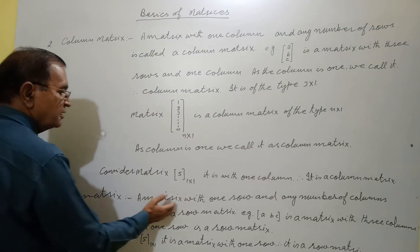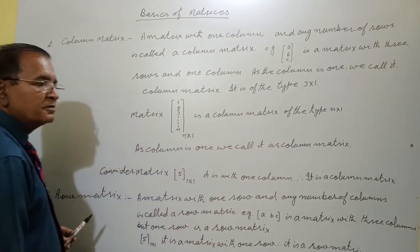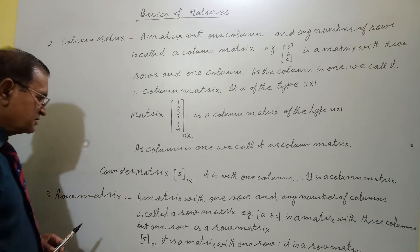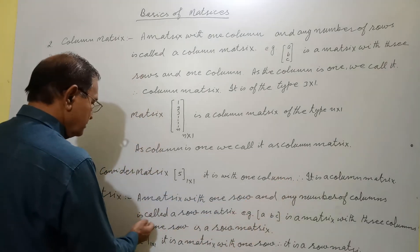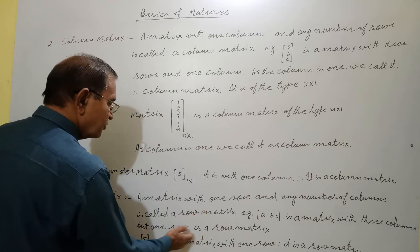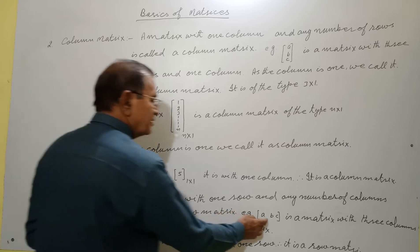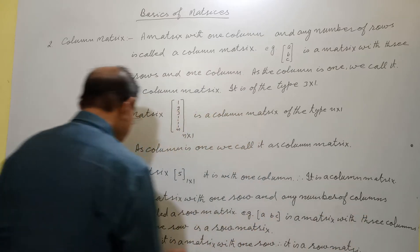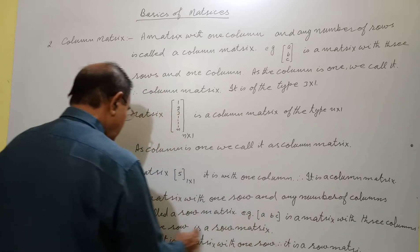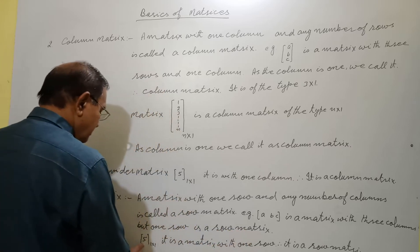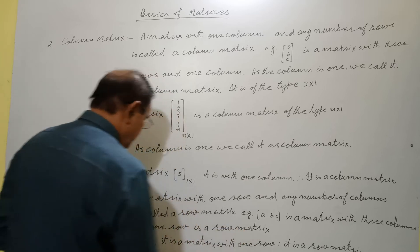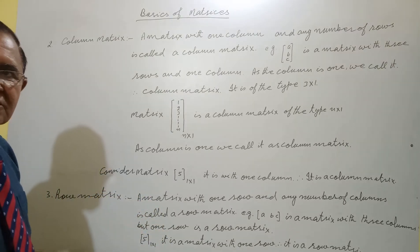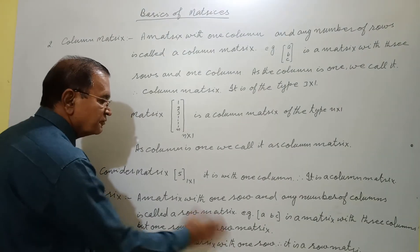Now come to the row matrix. A matrix with one row and any number of columns is called a row matrix. So if the column is one it is a column matrix; if the row is one it is a row matrix. Consider the example 5, 1, 1 — it is a matrix with one row, so we call it a row matrix.